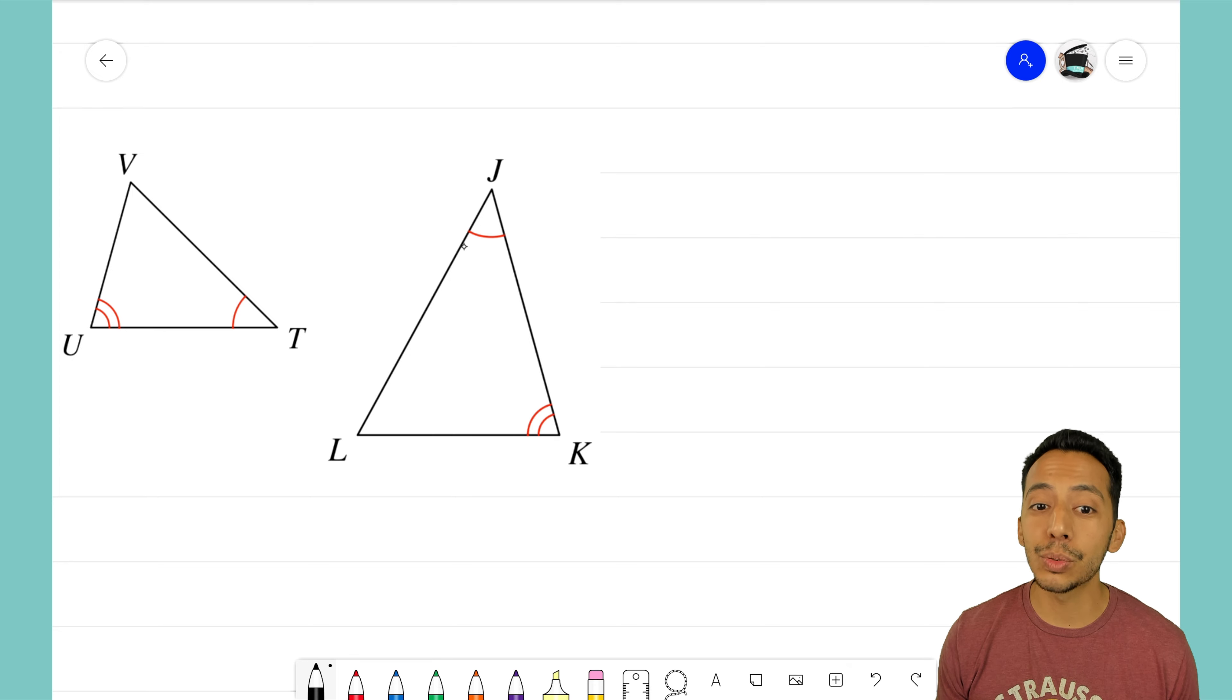Those marks mean that those angles are equal. Like I just mentioned, if we want to use Angle-Angle similarity, we need two sets of matching angles, and I think that's exactly what we have right here. So now all we have to do is organize our thoughts into a nice flowchart to show that these triangles are similar.